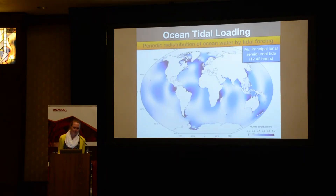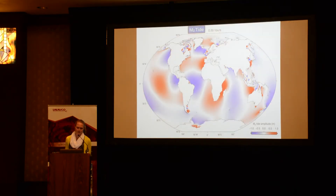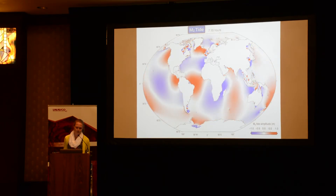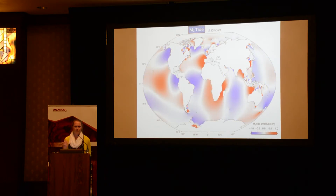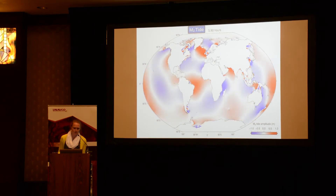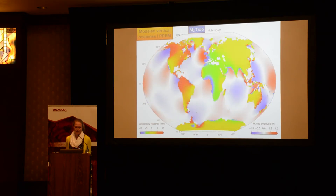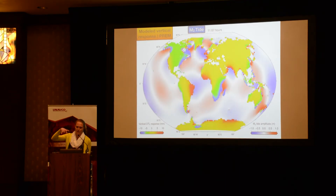One of the most prominent types of loading comes from the redistribution of ocean water by tidal forcing, which is known as ocean tidal loading. Tidal tomography is especially promising because the loads are relatively well constrained, large in amplitude, and periodic. The movie here shows the temporal evolution of the M2 ocean tide, which has a period of 12.42 hours and ranges in amplitude up to about one meter. High tide is shown in red and low tide is shown in blue. We can then superimpose over the continents the solid earth's vertical displacement response to the ocean tidal loading, where the surface is depressed during high tide and rebounds during low tide.